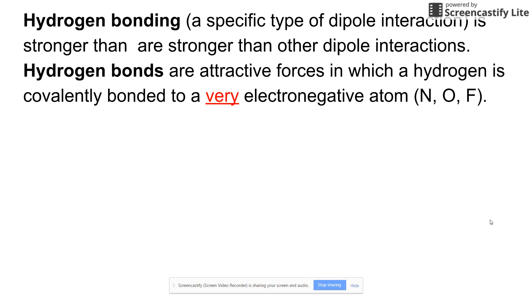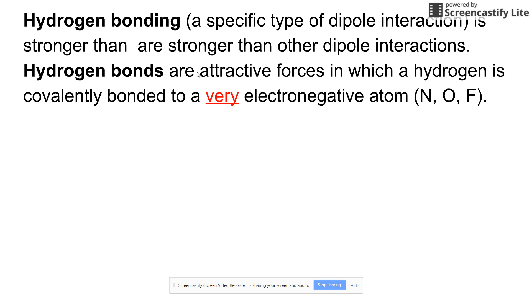Next, hydrogen bonding. It's important to note that it's a specific type of dipole interaction. It happens when the electronegativity difference between the two atoms is so great. It involves hydrogen connected to another atom with great electronegativity — it could be nitrogen, oxygen, or fluorine.